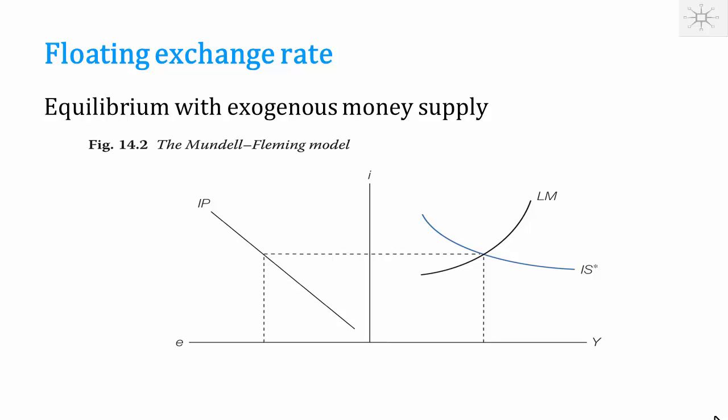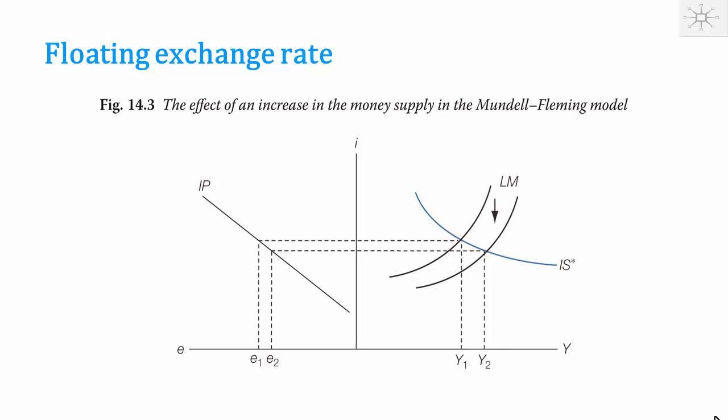We can illustrate the equilibrium by drawing the LM curve for a given money supply, showing how the level of production, the interest rate, and the exchange rate are determined. Expansionary monetary policy that increases the money supply pushes down the interest rate, leads to a depreciation of the currency, and produces an increase in production.